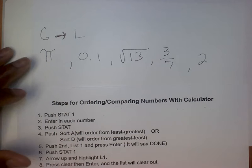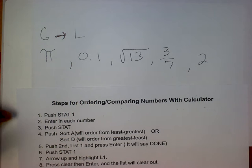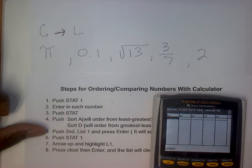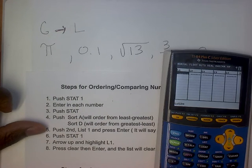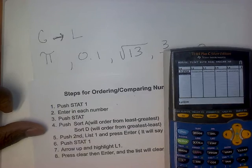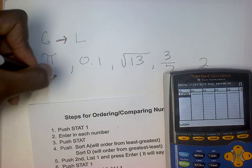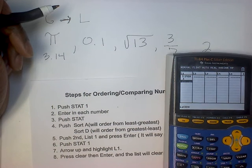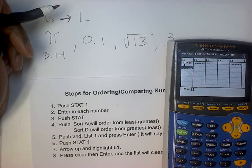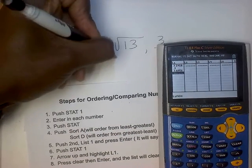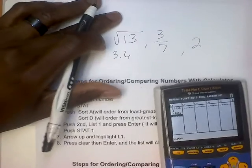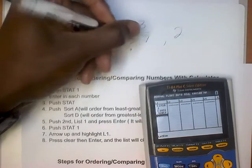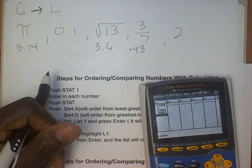Let's do another one. Now I have pi, 0.1, square root of 13, the fraction 3 over 7, and 2. I'm already at the list, so I'll enter each number. For pi, press 2nd then the pi button — it turns into a decimal. We should all know that one: 3.14. Then 0.1. Then the square root of 13 — I don't know the value of that, so I have to write it down; it comes out to about 3.6. Then 3 over 7 — I don't know the value of a fraction, so I turn it into a decimal: about 0.43.